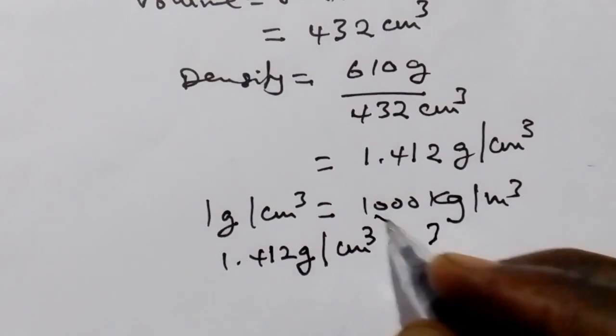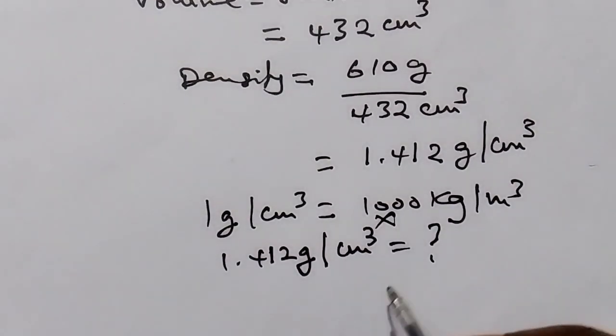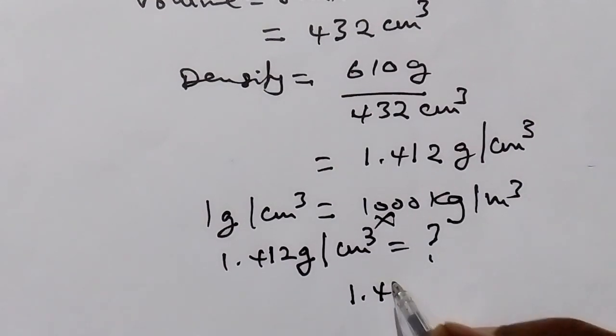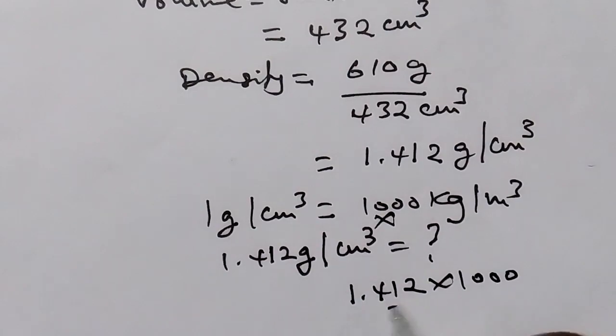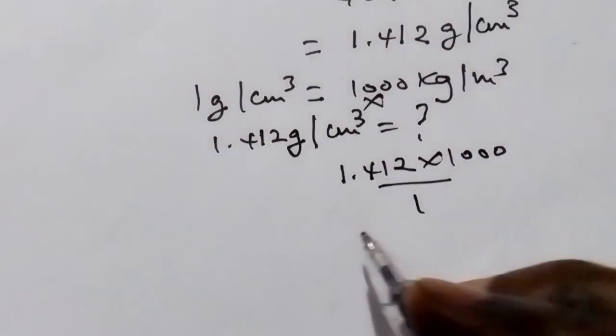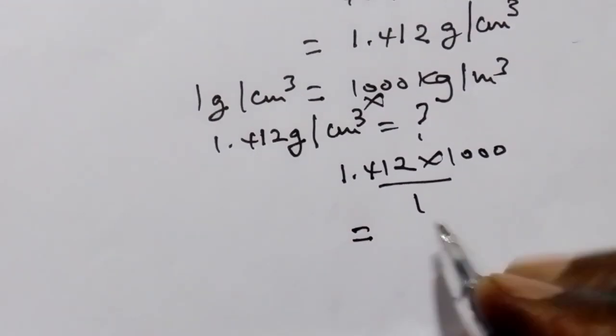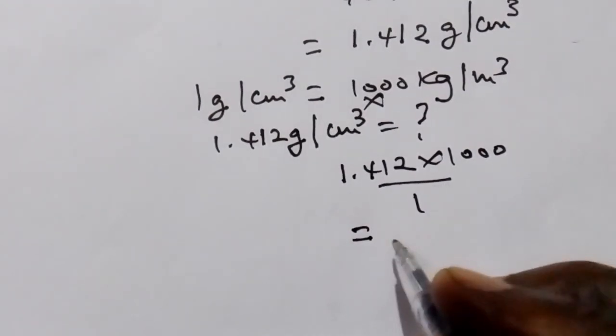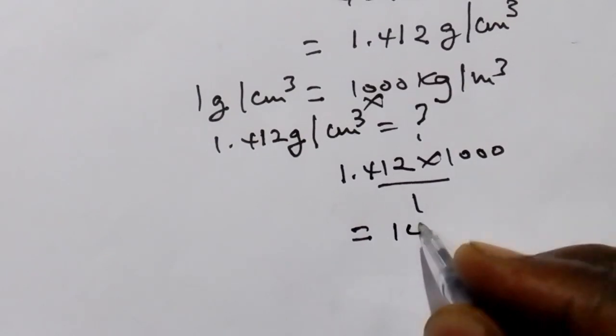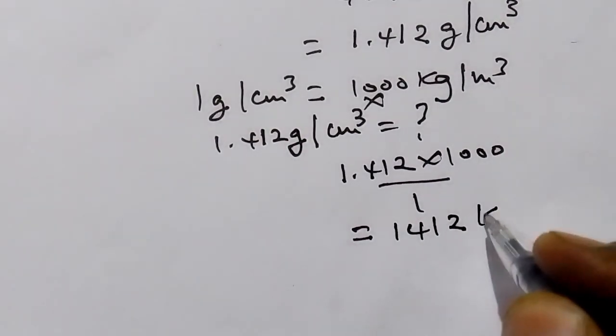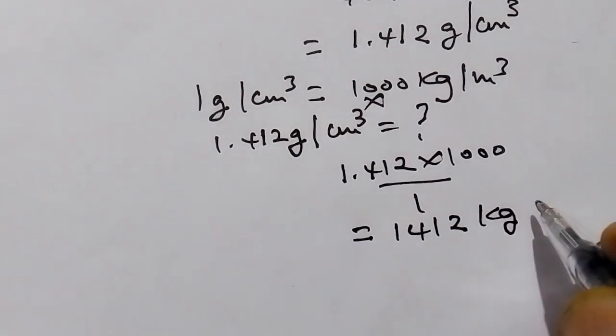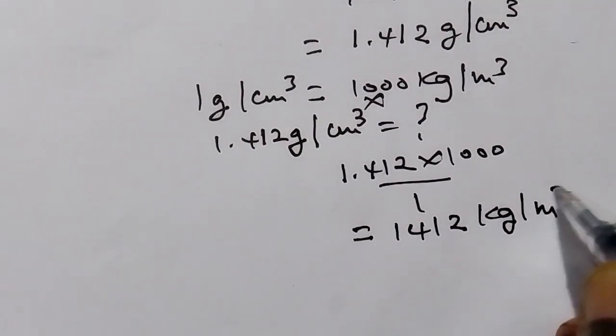So we cross multiply. It will be 1.412 times 1000 over 1. So this is going to give us 1,412 kilograms per meter cubed.